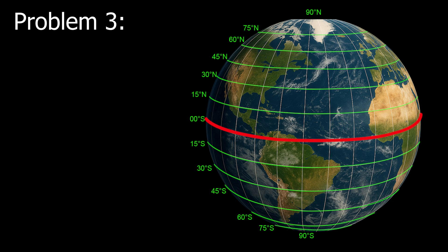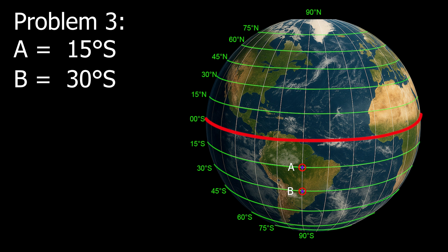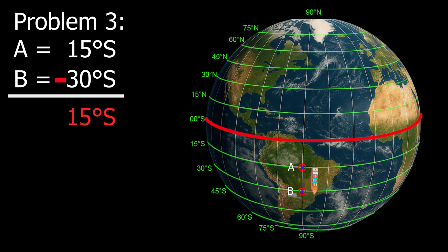Example number 3: Point B, 30 degrees south. The difference is 15 degrees. Since the vessel is moving south, the direction is south. Therefore, the D-lat is 15 degrees south.